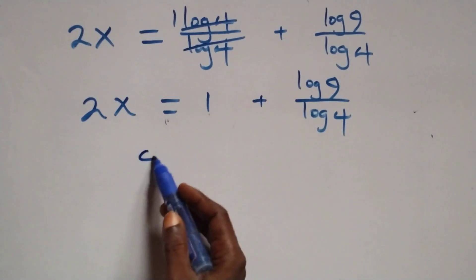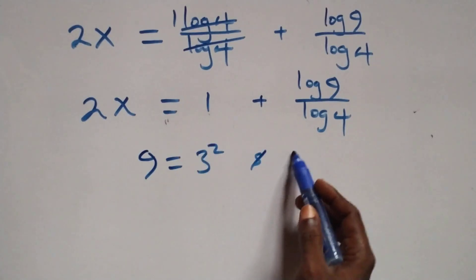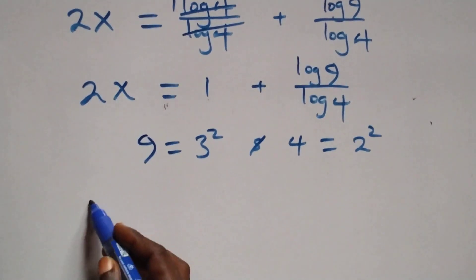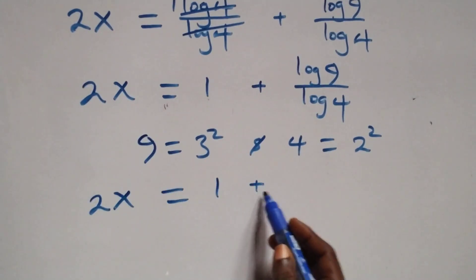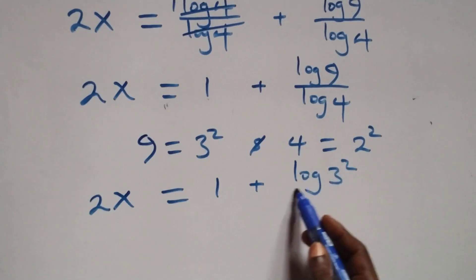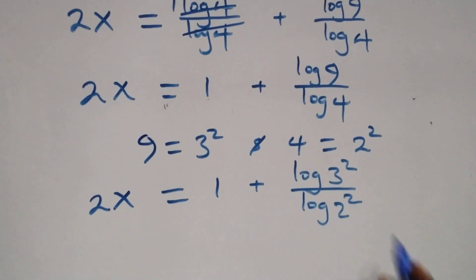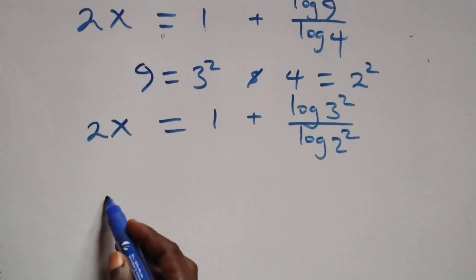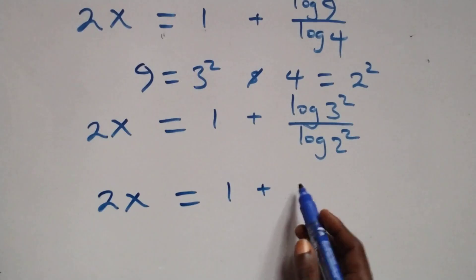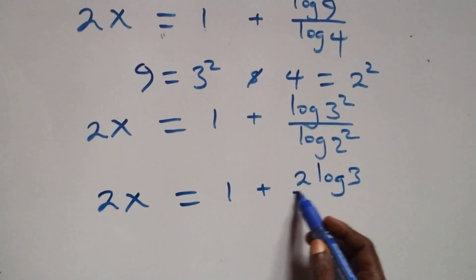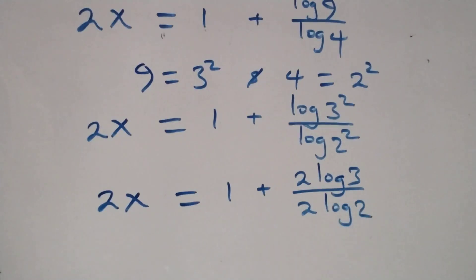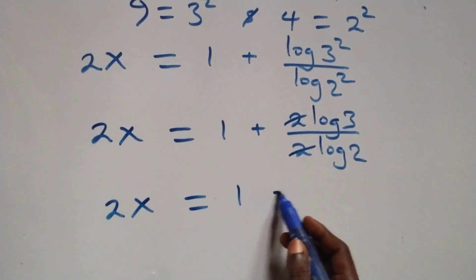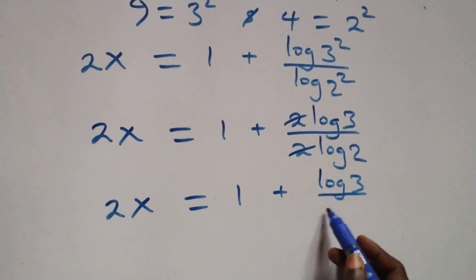Next, we can express 9 as 3 times 3, which is 3 squared, and also 4 as 2 times 2, which is 2 squared. So what we have becomes 2x equals 1 plus log 3 squared over log 2 squared. Applying the power law of logs, the 2s come out in front and cancel each other, giving 2x equals 1 plus log 3 over log 2.